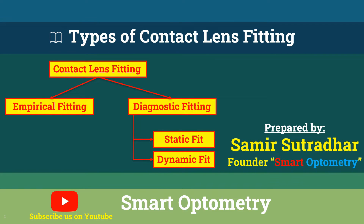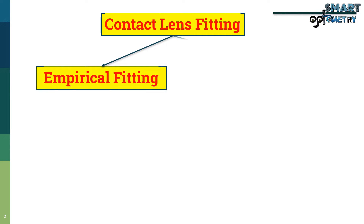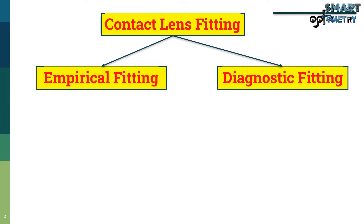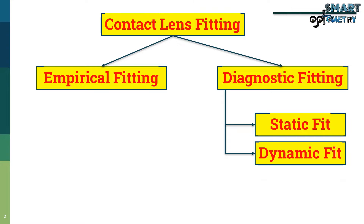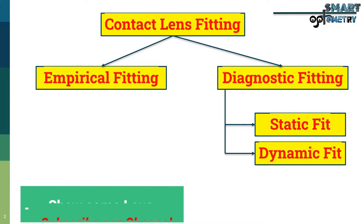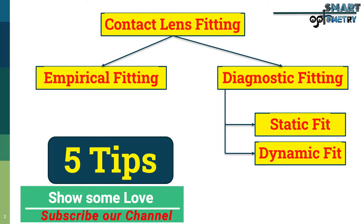Today, I will discuss about types of contact lens fitting. Contact lens fitting can be divided into two parts: empirical fitting and diagnostic fitting. Diagnostic fitting is further divided into two types: static fit and dynamic fit. I will discuss details about all these types of fitting in upcoming slides. Don't forget to watch 5 tips about contact lens fitting at the end of the video.